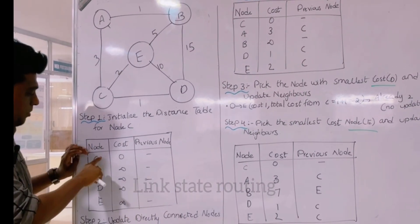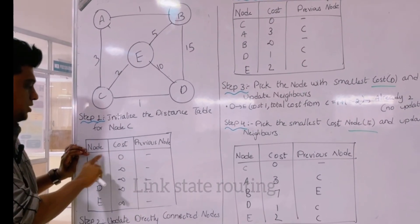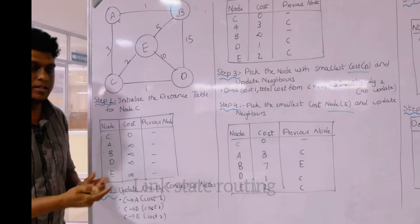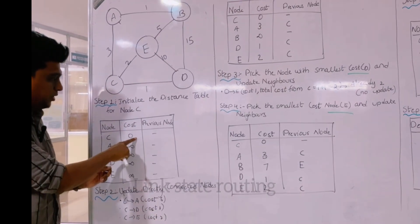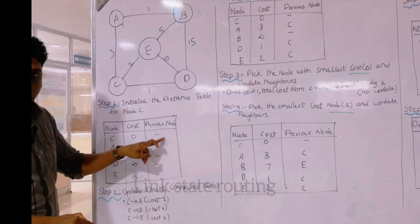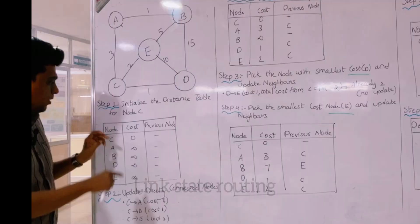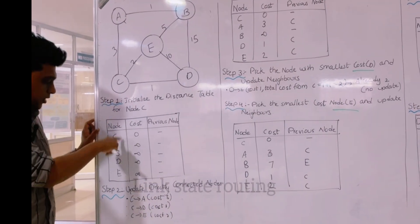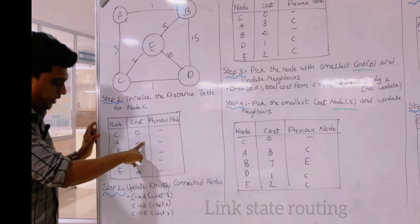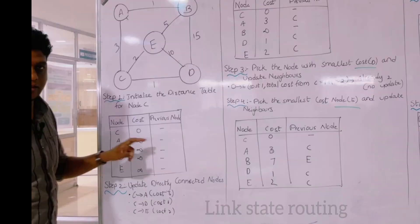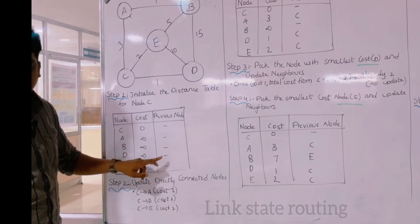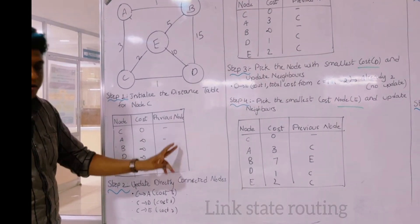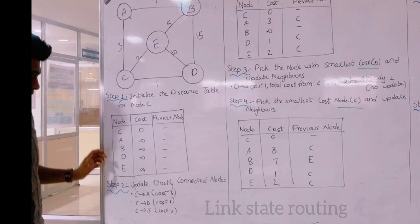Then the cost column. From C to C, there will be no cost — cost means the distance between them — so it is 0, and the previous node is also dash. We don't know the distance from C to all other nodes, so we keep it as infinity at the initial step. And for the previous node, we put a hyphen for all nodes.